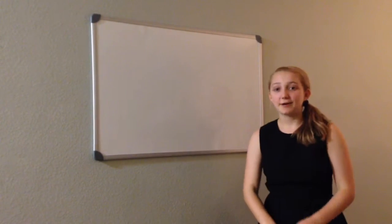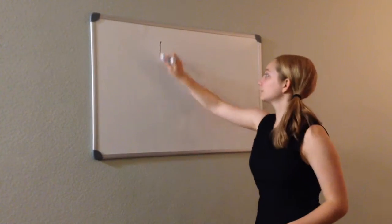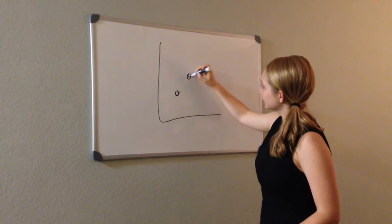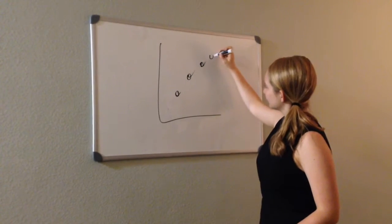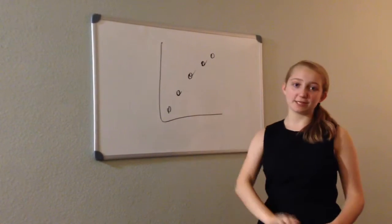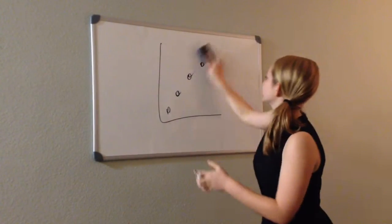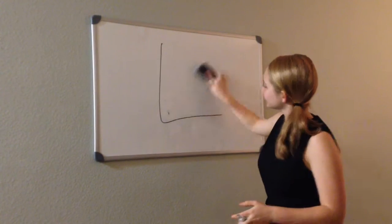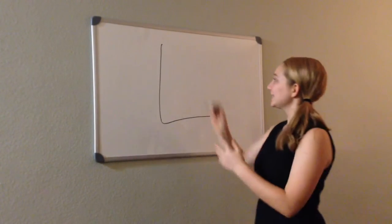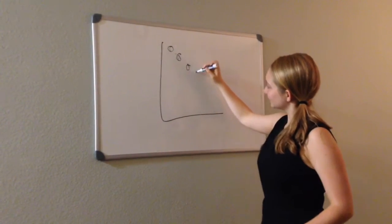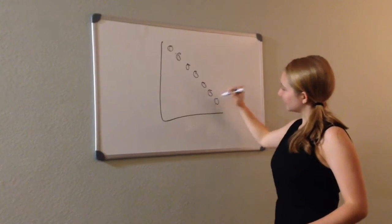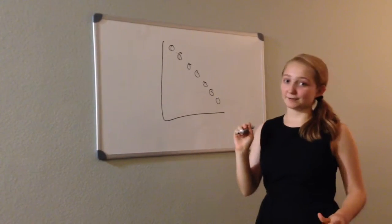Staying on graphs, when a graph is going up, it's called positive correlation. But when a graph is going down, it's called negative correlation.